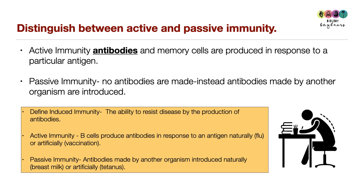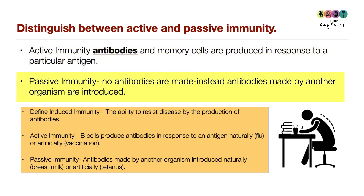Distinguish between active and passive immunity. With active immunity, antibodies and memory cells are produced in response to a particular antigen. With passive immunity, no antibodies are made by the individual; instead, antibodies made by another organism are introduced.